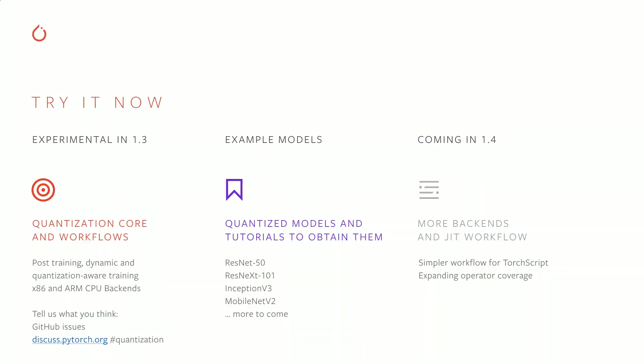To sum up, the quantization package is available in 1.3 and marked as experimental, which means everything I talked about should work with relatively stable APIs, with maybe minor tweaks before the next release. Please try it out and let us know what you think. You can create GitHub issues or go to the forums — if you use the hashtag quantization, we'll definitely take a look. We'll also be publishing tutorials on how to quantize common models in TorchVision and NLP, with models being uploaded to TorchHub. In the next release, 1.4, coming by NeurIPS, we plan to add a simpler workflow for converting models in TorchScript and continue expanding operator coverage. Thank you.